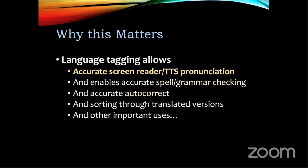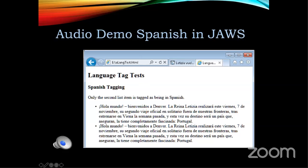This really matters for screen readers because you get accurate text-to-speech pronunciation. Even for other users it's important for accurate spell and grammar checking. If I switch to Spanish in some documents and don't tell it I'm typing in Spanish, it gets very angry and gives lots of typo warnings. On the iPhone, autocorrect is very aggressive, and if it doesn't realize text is Spanish, things get strange. So these things matter to everyone. I'm going to play a passage — one using English text-to-speech and the other using the correct Spanish one — and it's a Spanish passage.